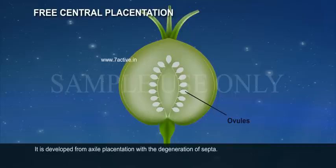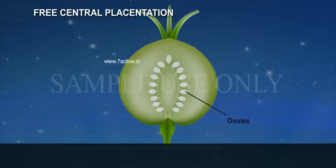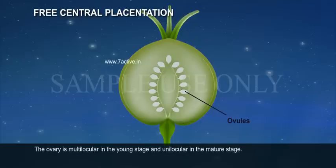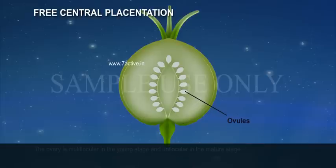Free central placentation: The ovules are borne around the central axis freely. It is developed from axial placentation with the degeneration of septa. The ovary is multilocular in the young stage and unilocular in the mature state. Example: Dianthus.